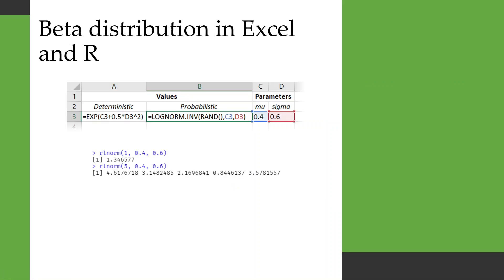And when it comes to implementing them in Excel and R, pretty simple stuff. On the probabilistic front for Excel, you're going to use the lognorm.inv function. And then as we've seen before, you pass in a random number between 0 and 1 and the parameters for your distribution.